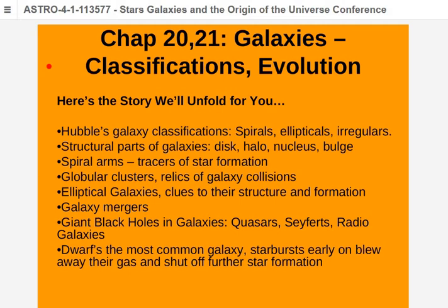Heavy elements are created only inside the cores of stars and blown out by supernova explosions. Population II stars have very little or essentially no metals in their spectrum, meaning they were born before there had been much in the way of supernovae to dirty up the galaxy with newly synthesized heavy elements. Population II stars are concentrated around the central bulge and halo of the galaxy. The oldest objects are the globular clusters.